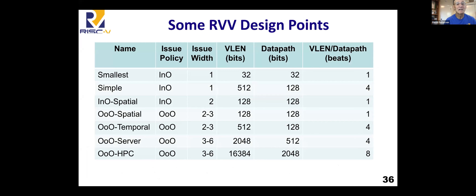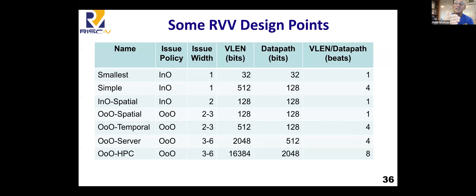The vector instruction set also has elegant ways to get rid of bookkeeping overhead that's typical for vectorized loops — if the loop count is not a multiple of the width, there's instruction set support that automatically handles those cases. It had input from a wide range of targets: people who wanted in-order as well as out-of-order execution, from one instruction per cycle to six instructions per issue, embedded vector registers of just 32 bits long all the way up to giant vector registers of 16K bits for high-performance computing, and data path widths from 32 bits to 2K bits per clock cycle.